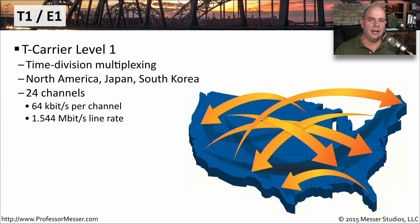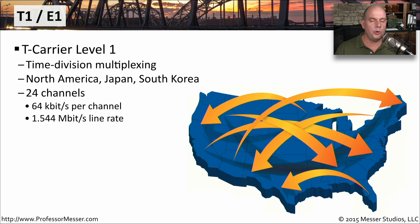A type of leased line that's been around for a very long time is the T1. T1 stands for T Carrier Level 1. It uses time domain multiplexing to send traffic from one site to the other, and you commonly see T1s in North America, Japan, and South Korea. A T1 has 24 channels, and each channel can transmit 64 kilobits per second, giving a total bandwidth of 1.544 megabits per second as a total line rate.